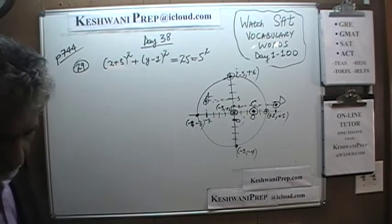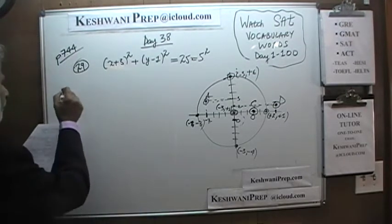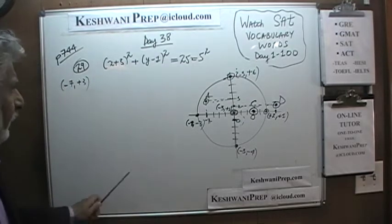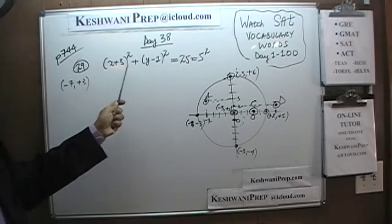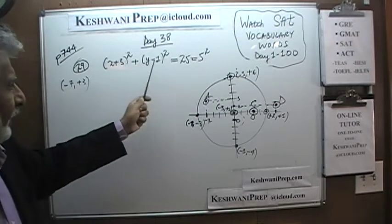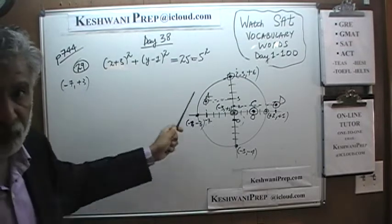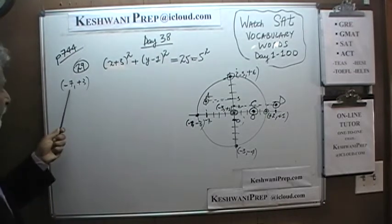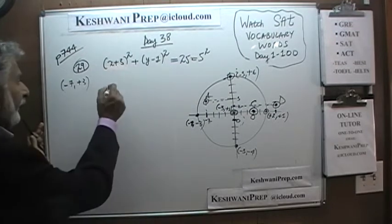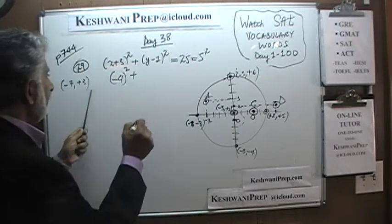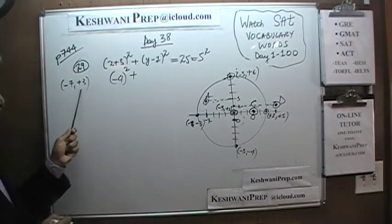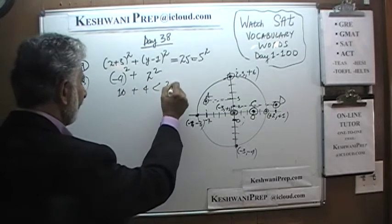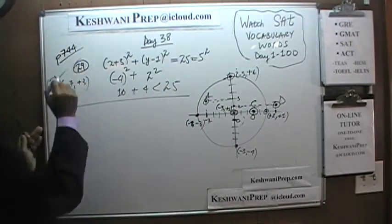If we do it algebraically, we just substitute the coordinates of the points given to us. If this quantity on the left-hand side is less than 25, the point is inside the circle. If it equals 25, it's on the circle. If it is more than 25, it's outside the circle. For point A, negative 7 and positive 3: that gives us negative 4 squared plus 3 minus 1 squared, which is 16 plus 4 — less than 25. That tells us A falls within the circle.